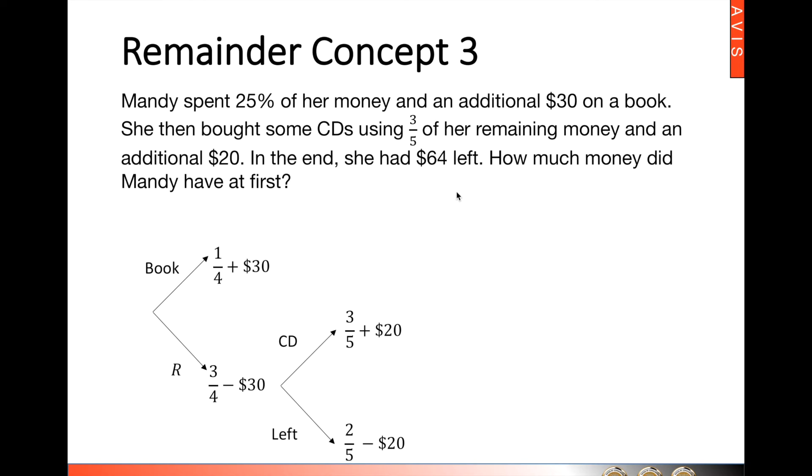And in the end, she is left with $64. So we can see that the $64 is what is left here. Now, what is interesting to note is two parts minus 20 is 64.